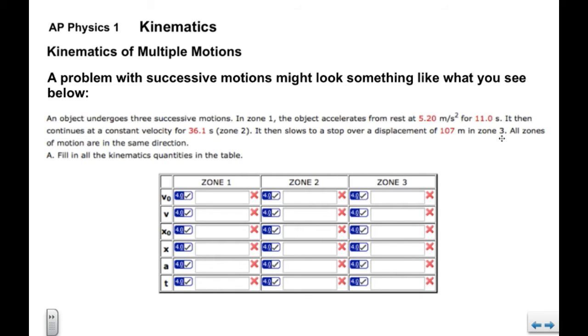So if we're told that they're all in the same direction, we can assume that they're all to the right. And then we're asked to fill in effectively all the kinematics quantities in the table for all three zones of motion.